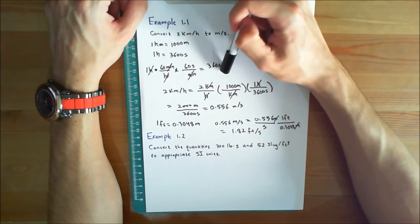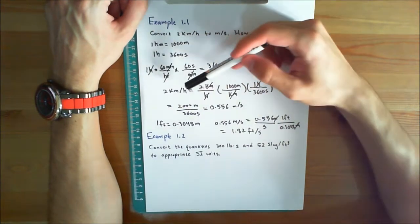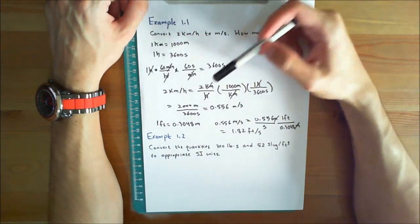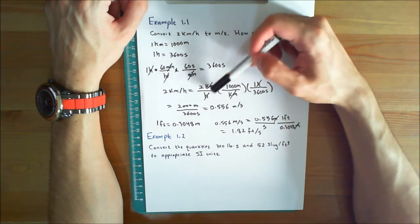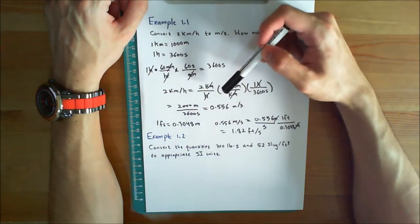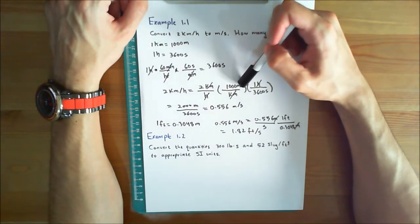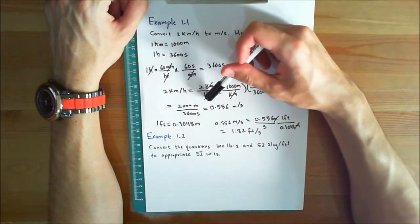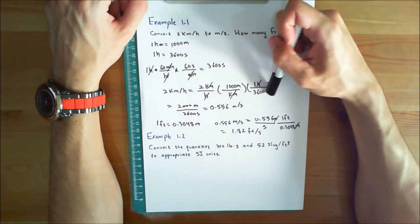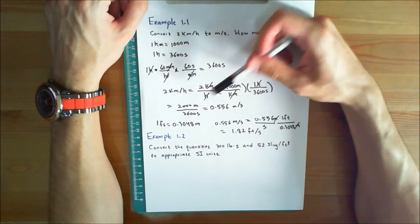2 kilometers per hour is equal to 2 kilometers per hour, write them on top of each other so that you can cancel out units, times 1 kilometer is equal to 1000 meters, times 1 hour gives you 3600 seconds. Cancel out the hours, cancel out the kilometers.